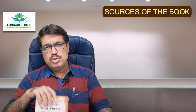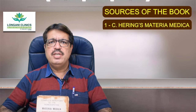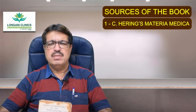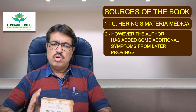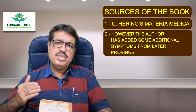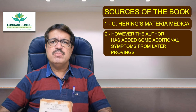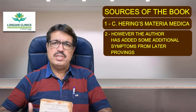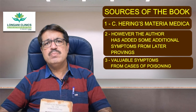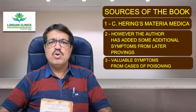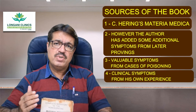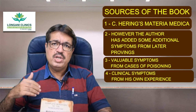The main source of this repertory is Constantine Herring's Materia Medica. The author has also added some additional symptoms from later provings, valuable symptoms from cases of poisoning, and clinical symptoms from his own experience.